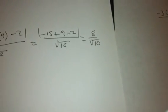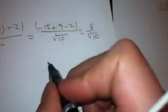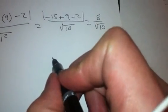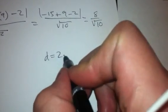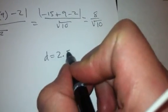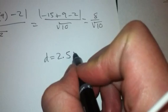That equals 8 over the square root of 10. Plugging that into our calculator, we find that d is equal to 2.52.